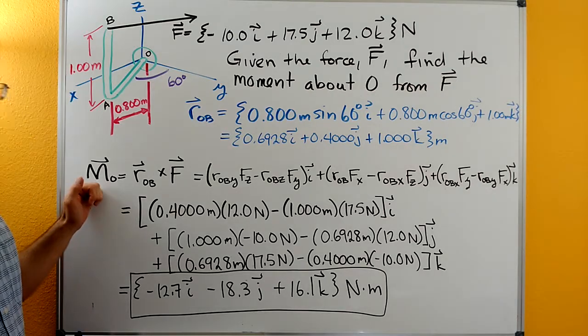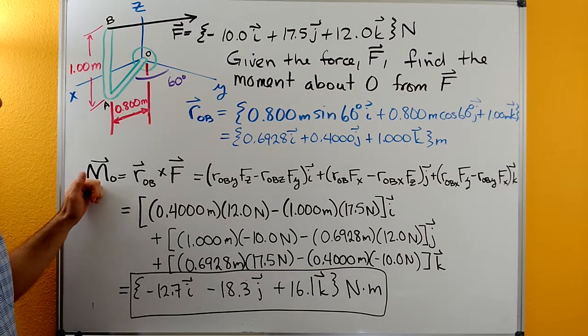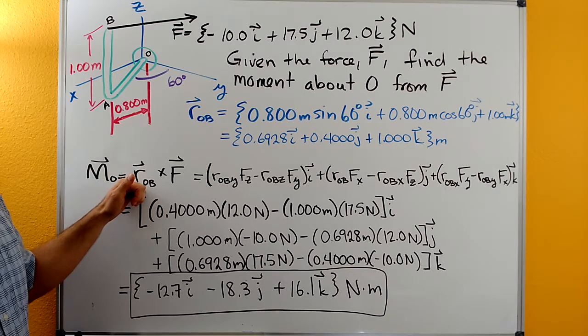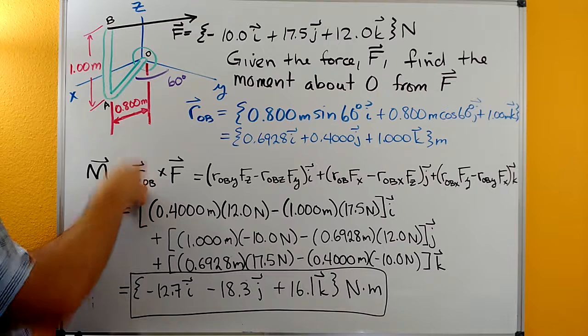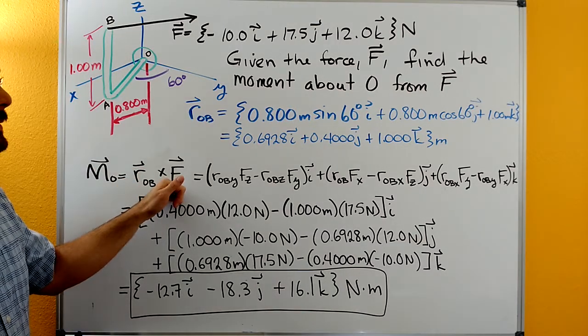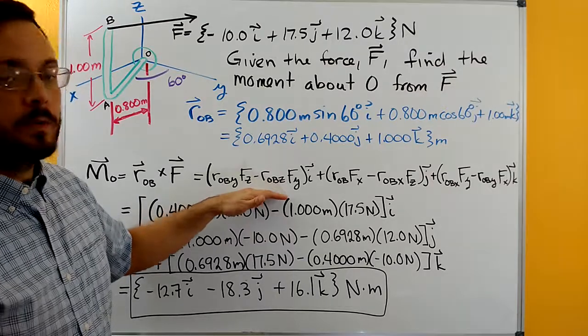We're going to now do this cross product. So the moment about O is the cross product from the position vector that goes from O up to anywhere on the line of action of the force across the force. And this is our equation that we can use.